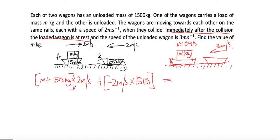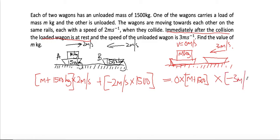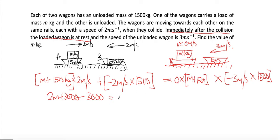The loaded wagon is at rest so v equals zero, so zero multiplied by (m + 1500) gives zero. Then we have negative three meters per second — remember it's negative — multiplied by 1500. Expanding: two m plus 3000 minus 3000 equals zero minus four thousand five hundred. The two 3000 terms cancel.